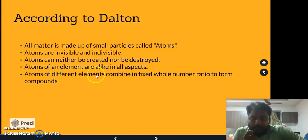Atoms of an element are alike in all aspects. Atoms of different elements combine in different whole number ratios to form compounds.